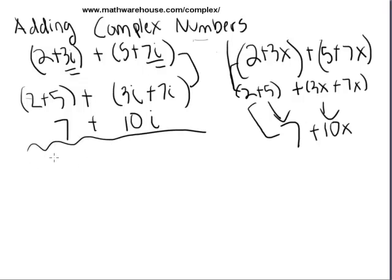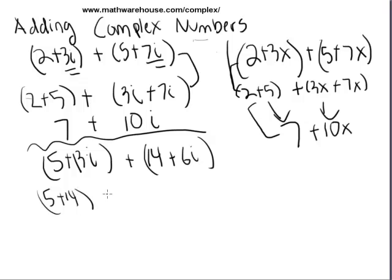Let's try another problem. Let's try 5+13i plus 14+6i. So step one is to regroup into like terms, 5+14 plus 13i+6i. Combine the like terms, 5+14 is 19, and 13i+6i is 19i.